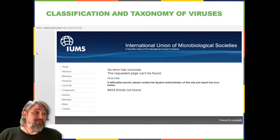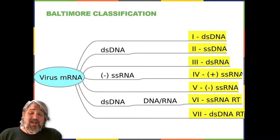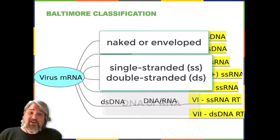The Baltimore classification system is an alternative to ICTV nomenclature. The Baltimore system classifies viruses according to their genomes—DNA or RNA, single versus double-stranded, and mode of replication—creating seven groups of viruses that share common genetics and biology. Viruses are also informally grouped based on chemistry, morphology, or other shared characteristics, including naked or enveloped structures, single-stranded or double-stranded DNA or RNA genomes, segmented or non-segmented genomes, and positive-strand or negative-strand RNA.